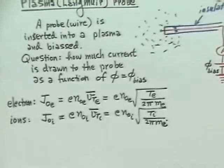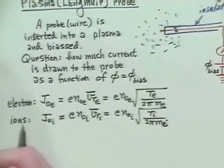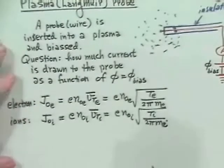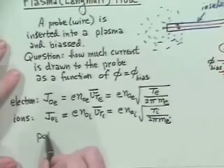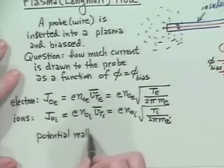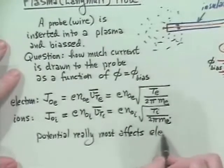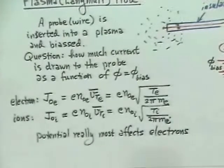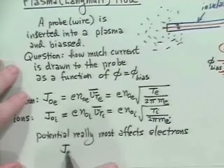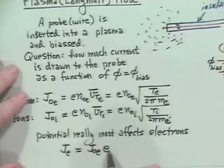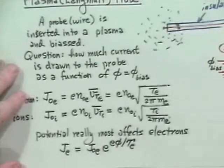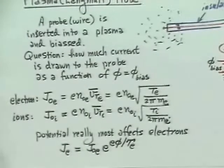Now, the potential, does it affect both ions and electrons equally? Well, the answer is generally no. The electrons get manipulated by the potential, and the ions kind of lag behind a good bit. And so, let's just say potential really most affects electrons. So, what we end up doing is saying, then, that the electron current is, in fact, J-naught-e times E to the E-phi over Te. And, again, potential has to be measured relative to something, but we'll just leave it in that form.